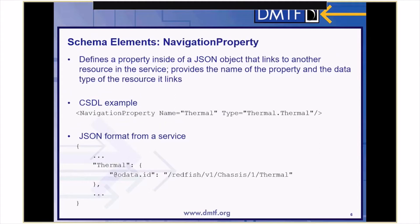A navigation property element is used to define a property inside of a JSON object that links to another resource in the service. It provides the string name of the property and the data type of the resource it links. In this CSDL example, a navigation property named thermal is defined, and its data type is set to thermal dot thermal. We'd expect to see a property in the JSON body named thermal, and its data will be an object containing the link to the appropriate resource. The OData convention for these objects is to contain a single property named at OData.id, and the value is the URI of the resource — in this example, redfish v1 chassis 1 thermal.